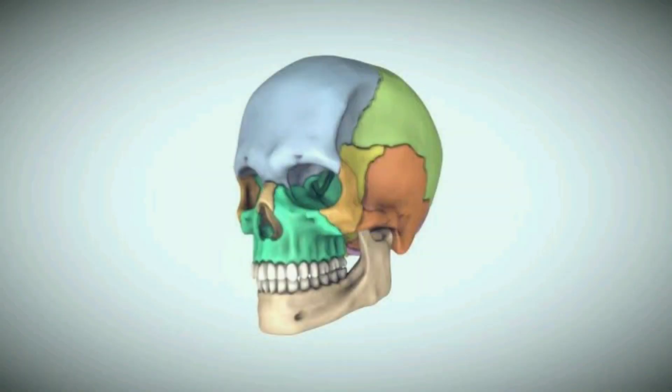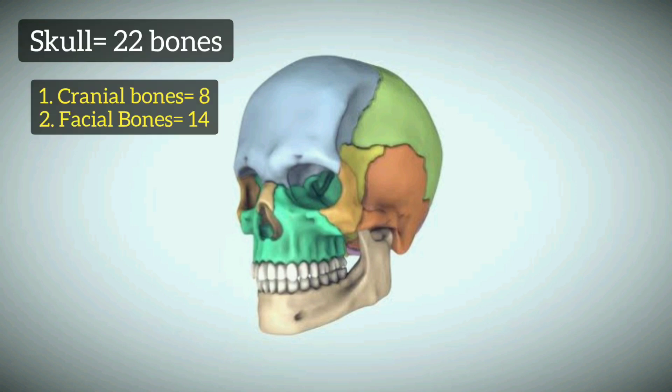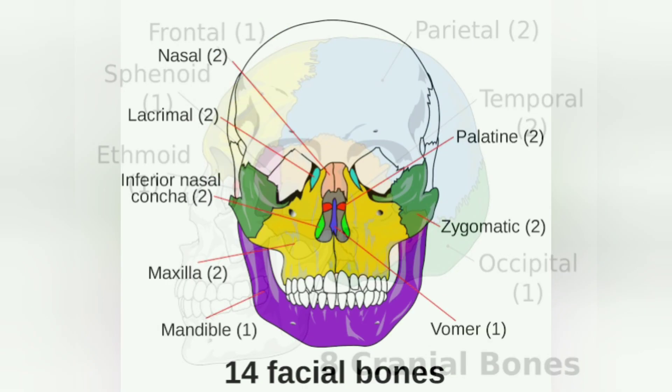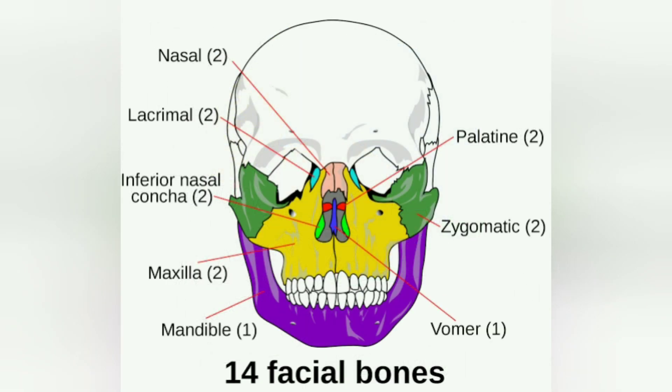Bones of the skull: the skull has 22 bones and is divided into two parts — the cranium, which has 8 bones, and the bones of the face, which total 14. So 14 plus 8 gives a total of 22 bones in the skull.